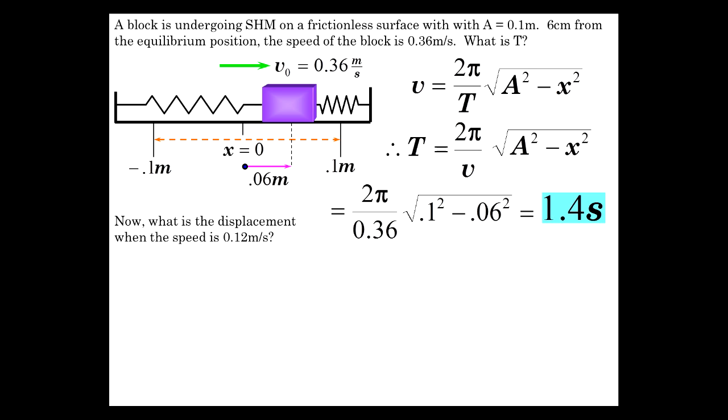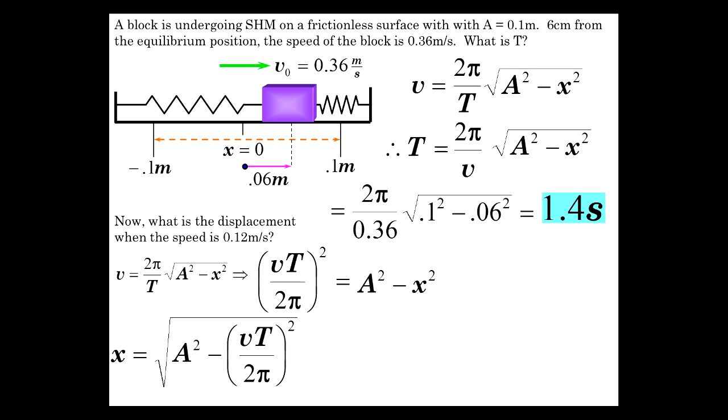All right. Now with the same problem, what's the displacement? Where is that object when the speed is 12 centimeters per second? Well, once again, we use that same expression. We're looking for the displacement, so let's do some algebra. vT over 2 pi squared equals A squared minus x squared. Solve for x. And I think I did the algebra right there. Now let's plug in some numbers. There was all the numbers plugged in. And out pops 0.096 meters.